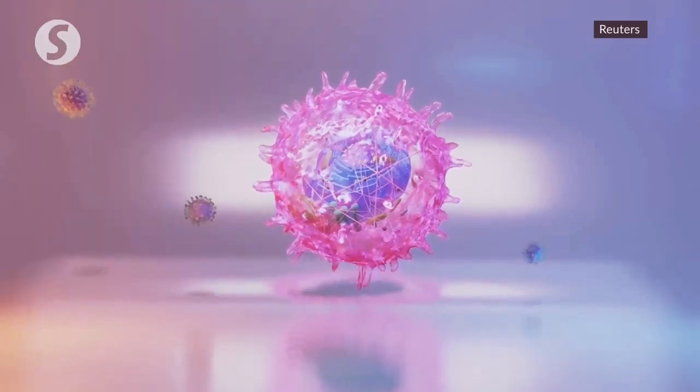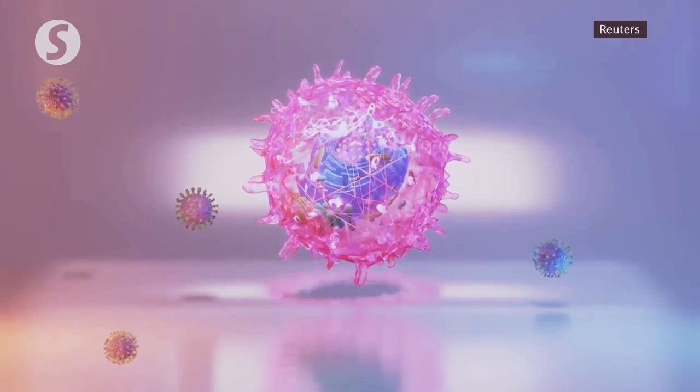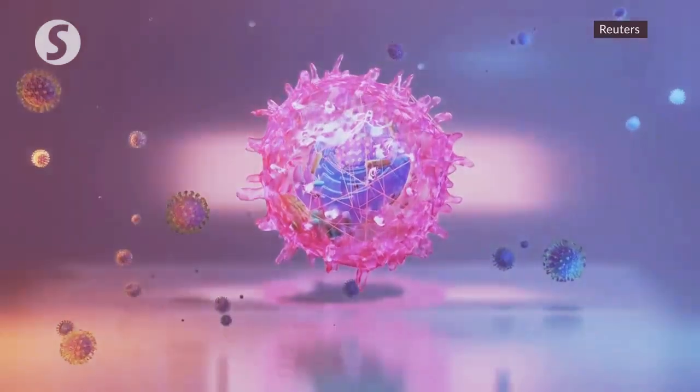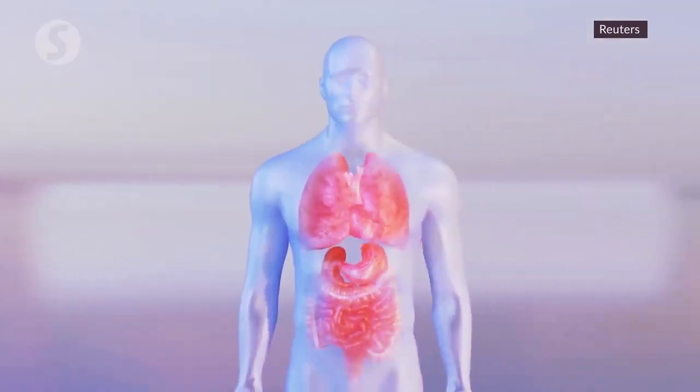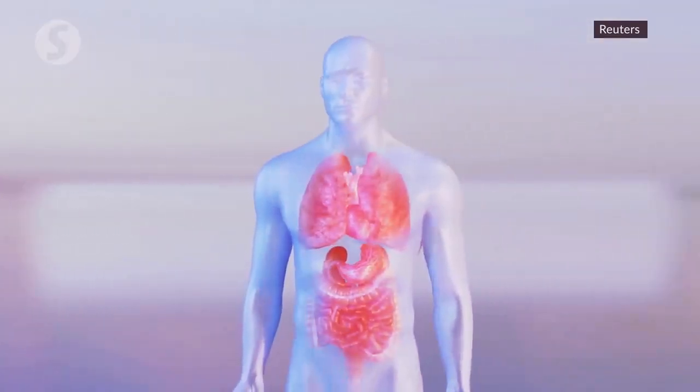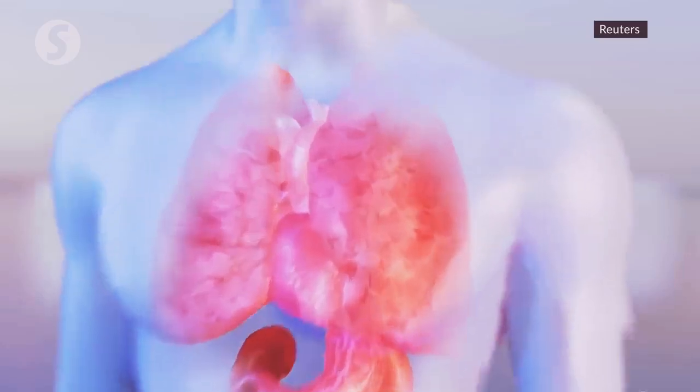Researchers from China have used cryo-electron microscopy to show how SARS-CoV-2 infects humans. The study published in Science says the virus targets a type of receptor found on human cells in the lungs, heart, kidneys and intestines.